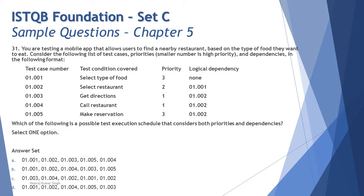For example, test case 4 is high priority but depends on test case 2, meaning 2 must be executed before 4 can run — regardless of priority. Dependencies must be removed before a test can run. It's like saying you cannot log in without first registering: no matter how high login's priority is, you must sign up first. That's what logical dependency is all about.